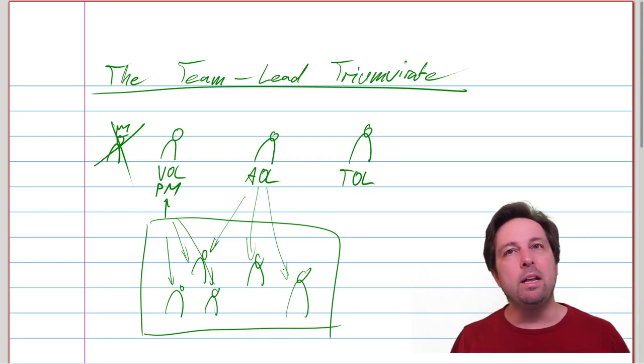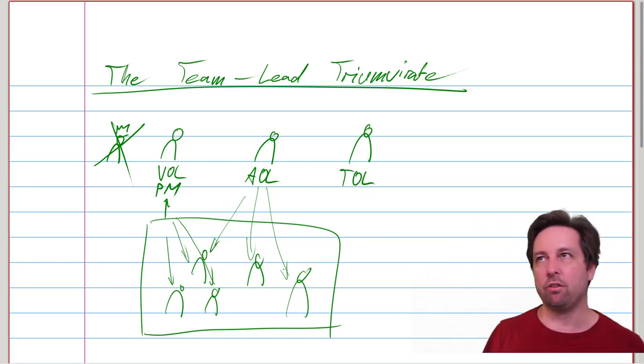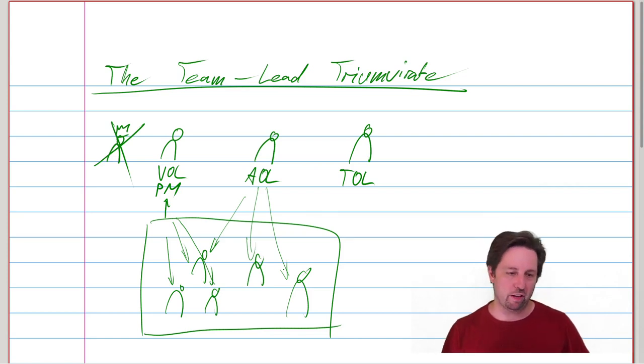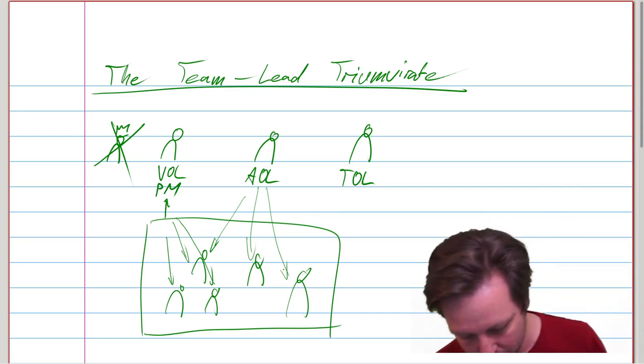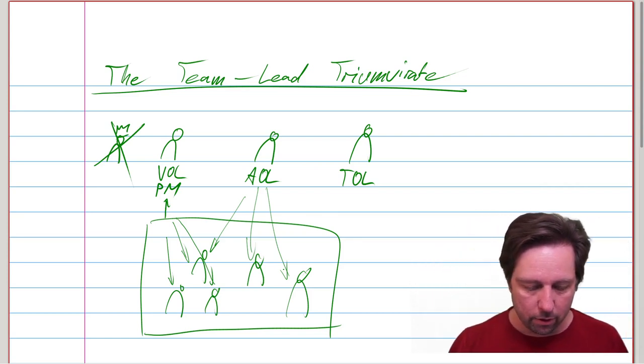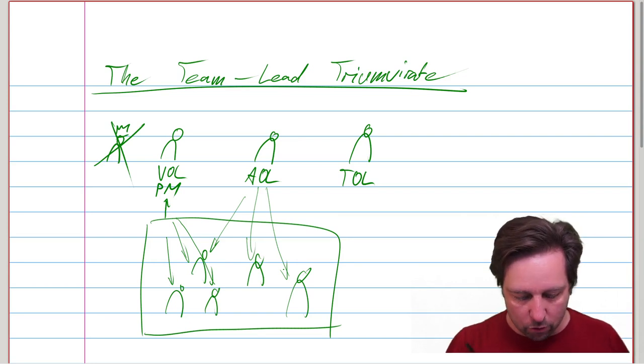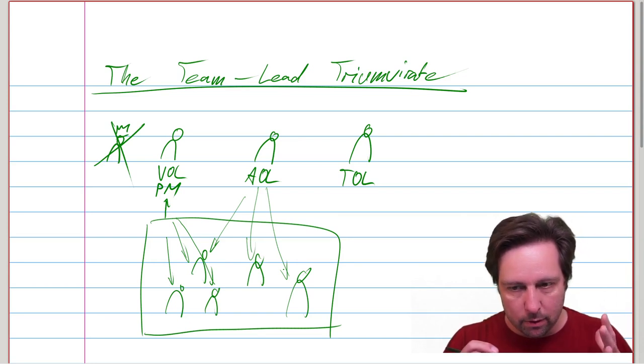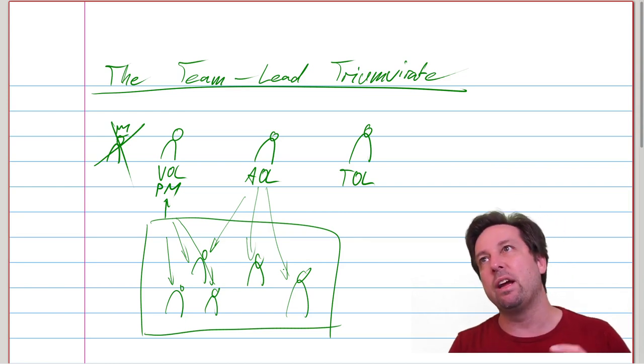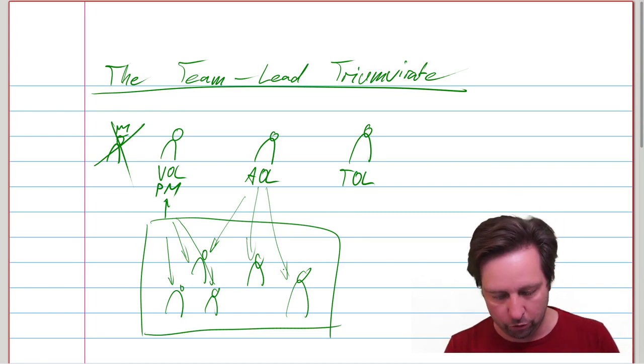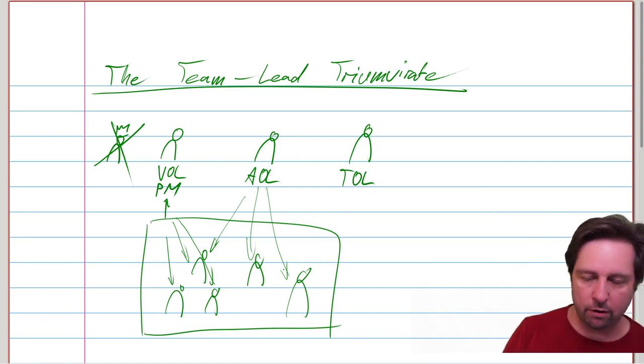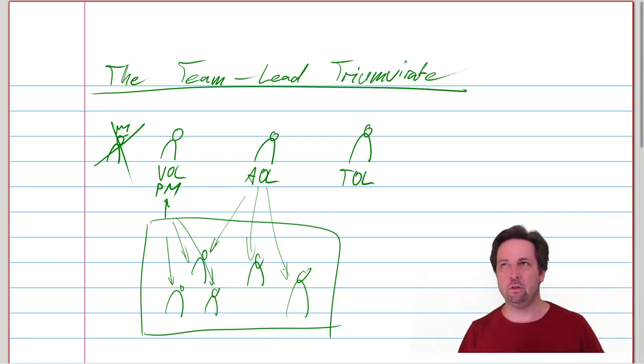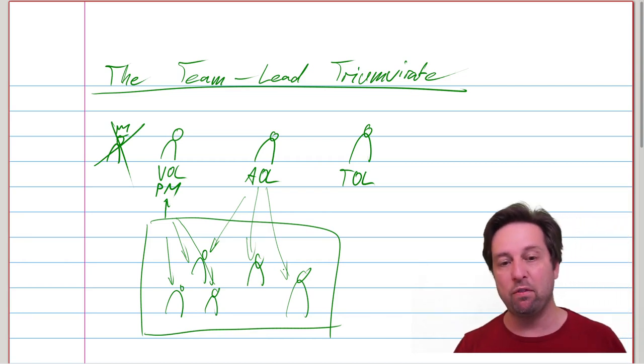They might be in a better position to offer suggestions or spot issues as they are still brewing. So that's fine. This is the person who takes care that we are achieving our architecture goals. Just like the value outcome lead is the person who takes care that we are achieving our value goals.